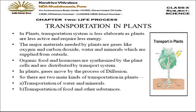First is transportation in plants. In plants, the transportation system is less elaborate as plants are less active and require less energy. Plants are stationary and do not move, so their energy requirement is also less. The major materials needed by plants are gases like oxygen and CO2, water, and minerals supplied from outside.